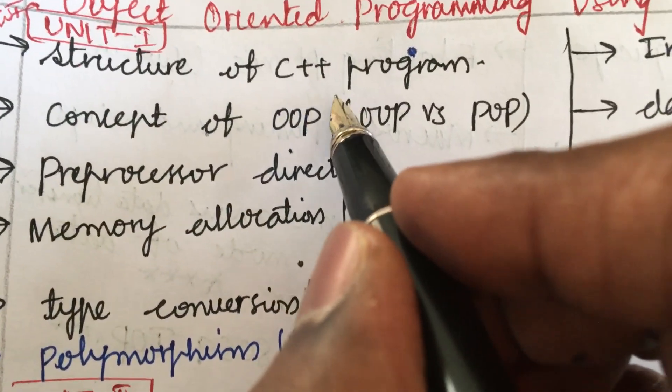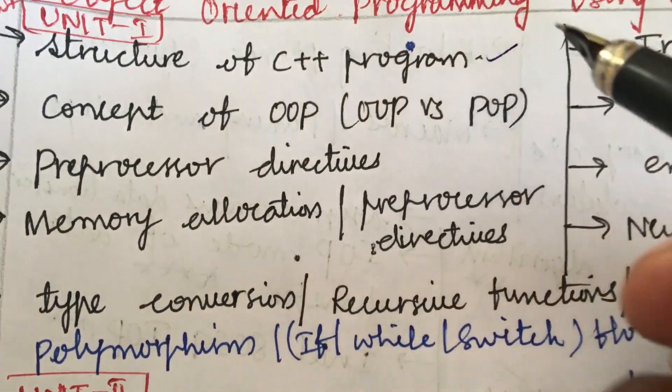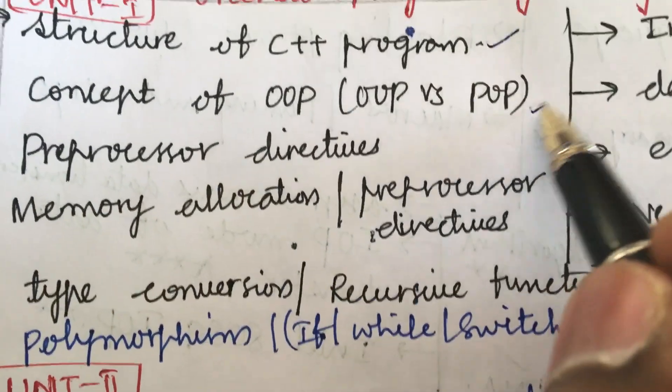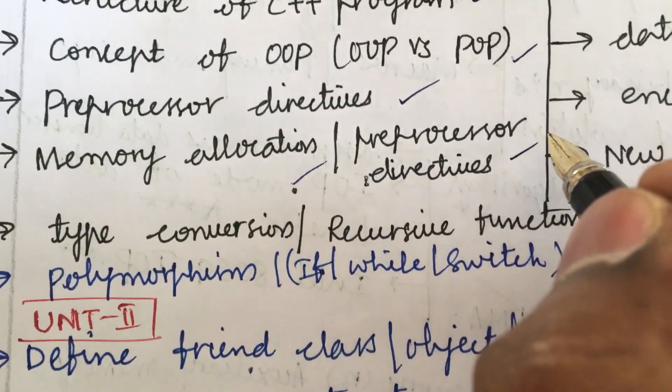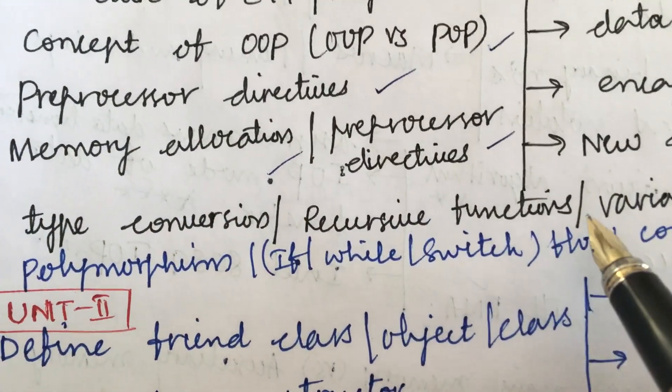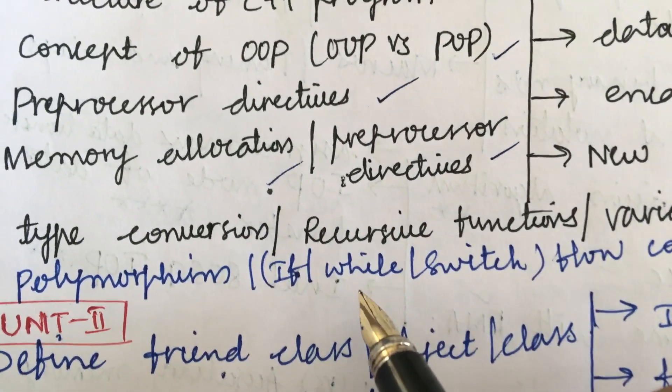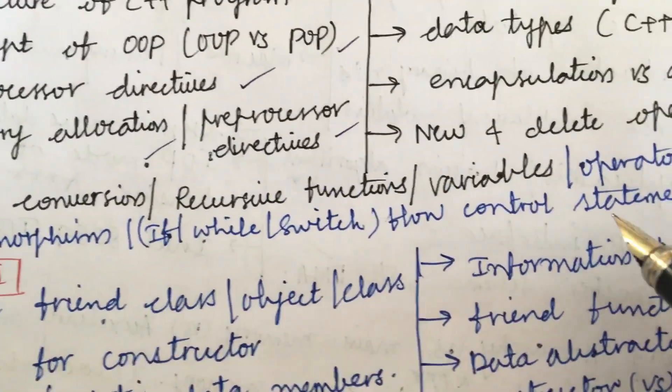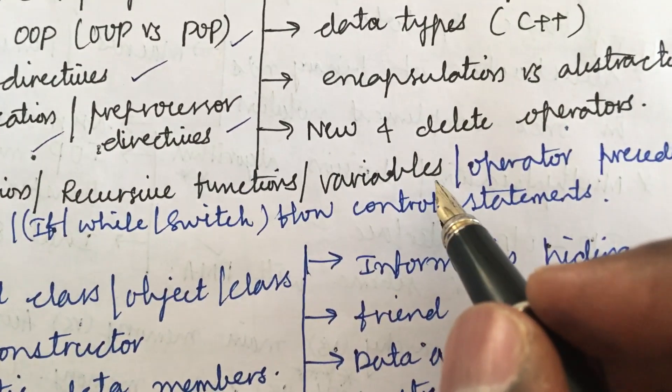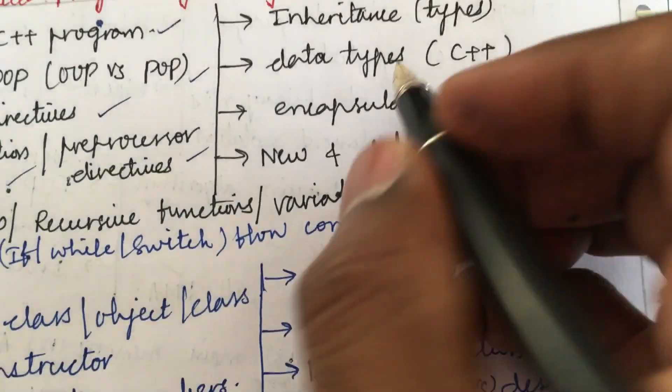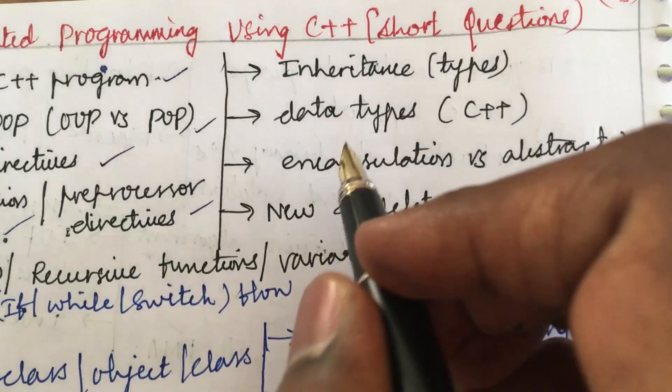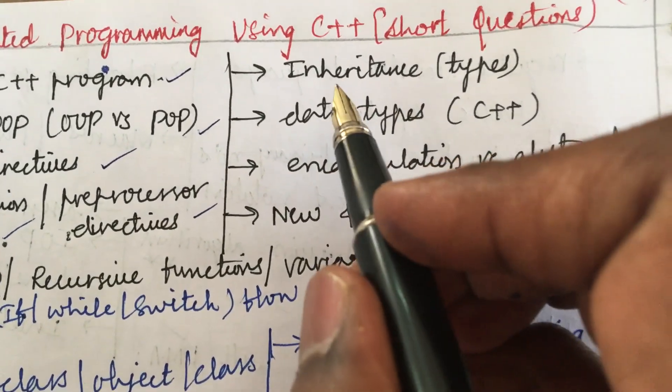From unit 1, you may be asking the structure of C++ program, concept of OOP or OOP versus POP, pre-processor directives, memory allocation, type conversion, recursive functions, polymorphism, if, while, switch, flow control statements, define the term variables and operator precedence, new and delete operators, encapsulation versus abstraction, data types in C++, inheritance and the types.